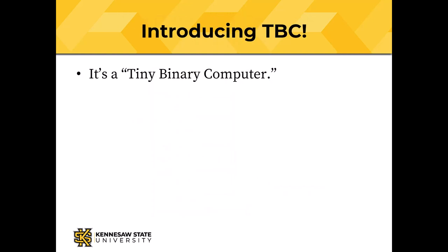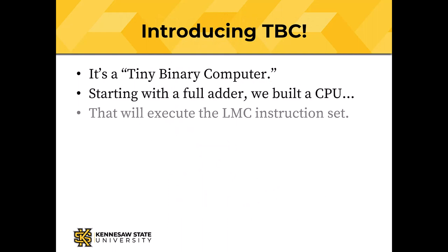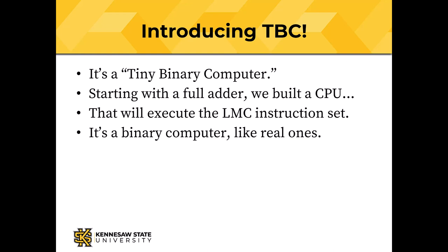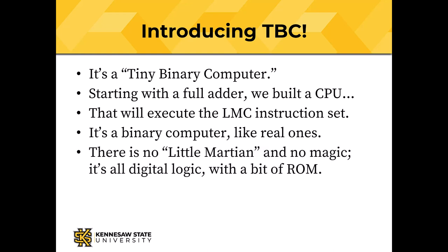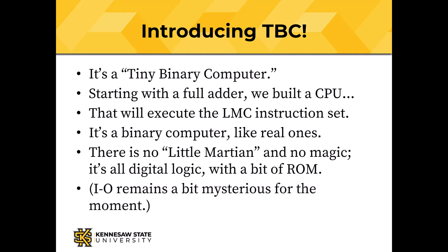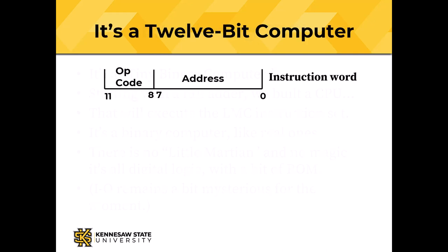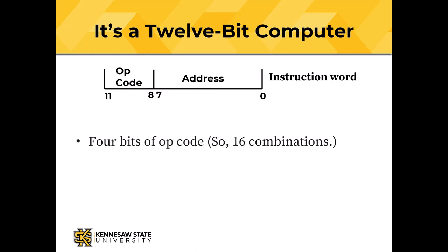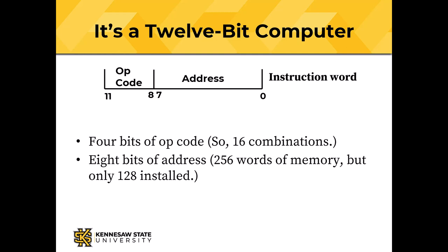So now we can introduce TBC, the Tiny Binary Computer. Starting with a full adder, we built a CPU that will execute the little Martian computer instruction set, but it's a binary computer like real ones — there's no little Martian and no magic. TBC is a 12-bit computer. There are 4 bits of operation code, giving us 16 possible operations. There are 8 bits of address, so we can have at most 256 words of memory, but we have installed only 128.